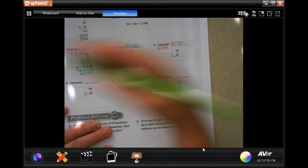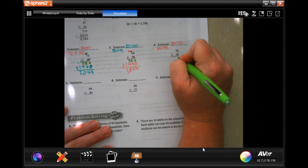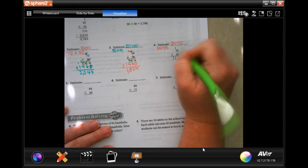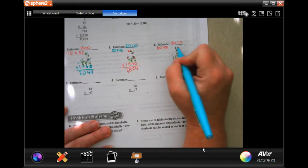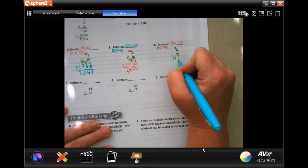So now 2 times 9 is 18, carry our 1. 2 times 5 is 10, plus 1 more is 11. Now tic-tac-toe.